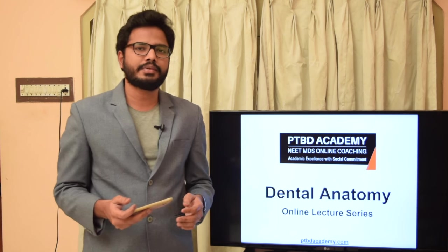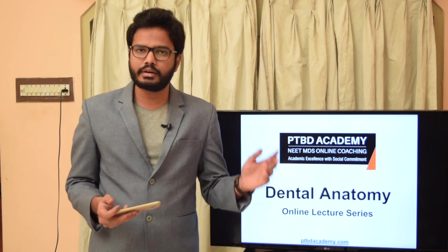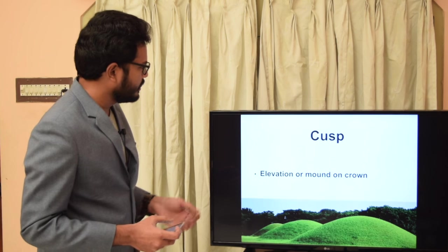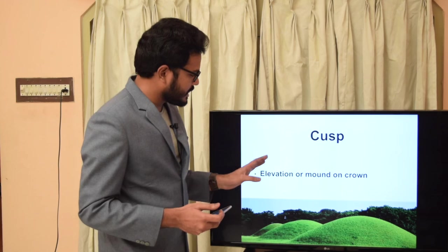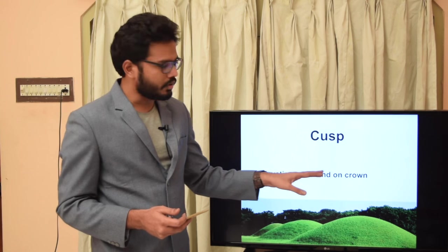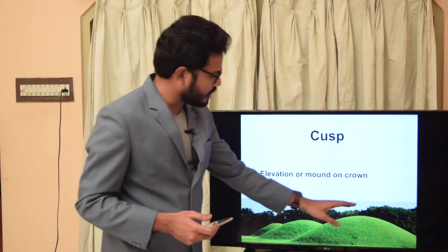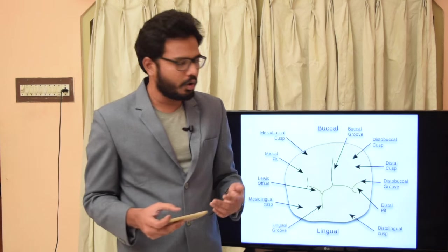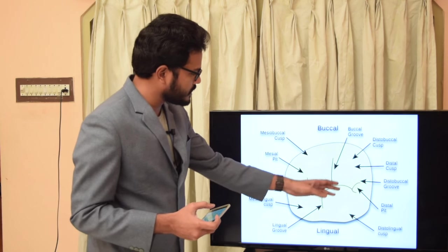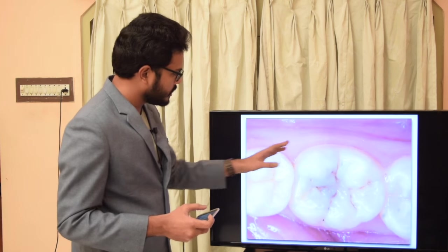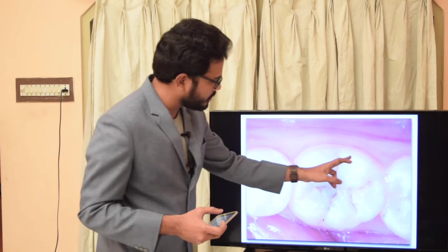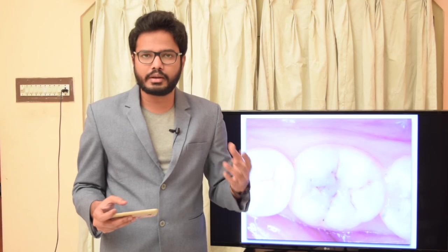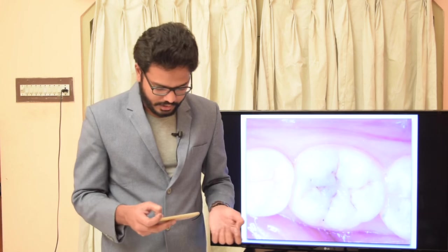In this video let's discuss various anatomical landmarks of a tooth and related multiple choice questions. The first anatomical landmark is the cusp — an elevation or mound on a crown. A mound is a heap-like structure, and similarly we find a heap of enamel on the crown. Various cusps are present on occlusal surfaces, usually on premolars and molars.